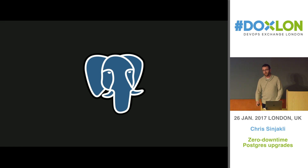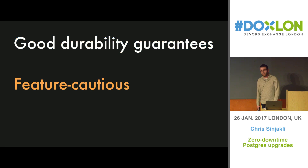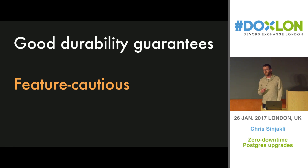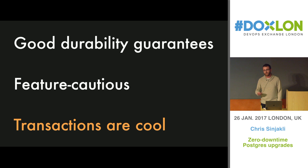All of the important data we have — everything from customers to the money being transferred to the bank account details — is stored in Postgres. There are a number of reasons we like and trust it as our main store. It offers good durability guarantees: when a write has been acknowledged by Postgres, you can be pretty confident it's been written to disk, and if you've set up replication properly, it has been copied to another server. The core team of Postgres is relatively feature-cautious, which chimes well with the way we like to do engineering. Also, transactions are really cool — being able to do multi-object transactions, say 'save all of this stuff or none of it,' is very helpful to developers.